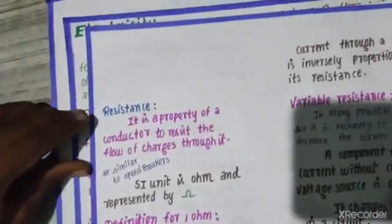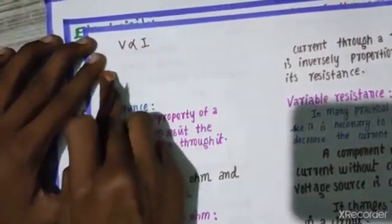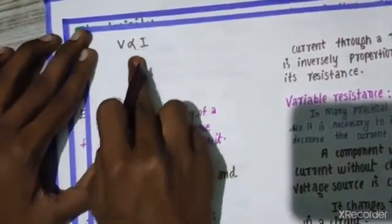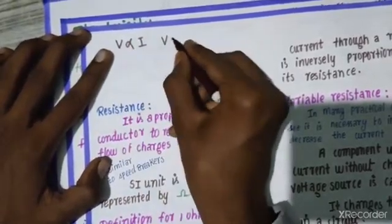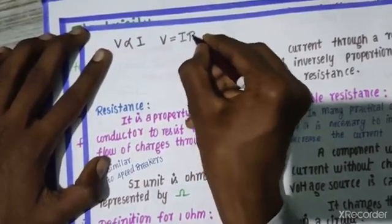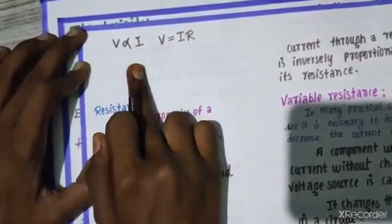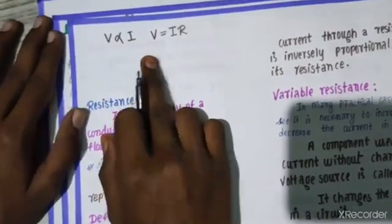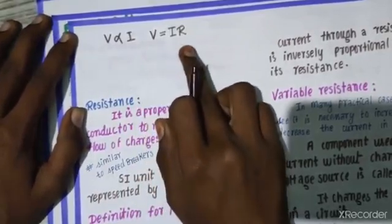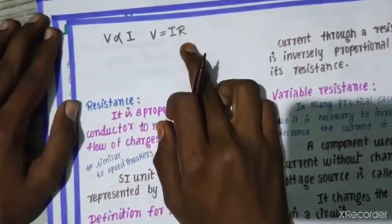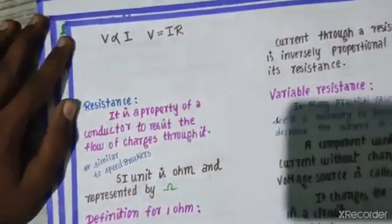So how will you represent this mathematically? Just remember this: V is directly proportional to I. If you want to remove proportionality and replace it with equality, you have to introduce a constant. If you want to replace this with the equality, you have to always introduce this constant.